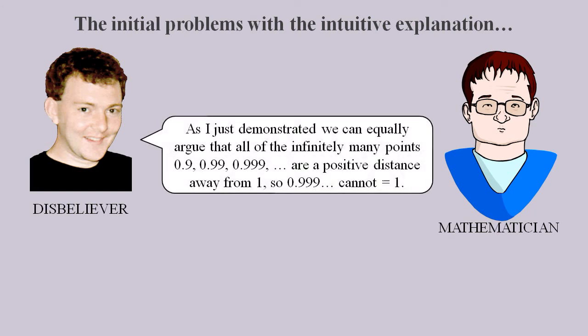So the first problem with the mathematician's intuitive explanation is that they reject an equivalent argument.